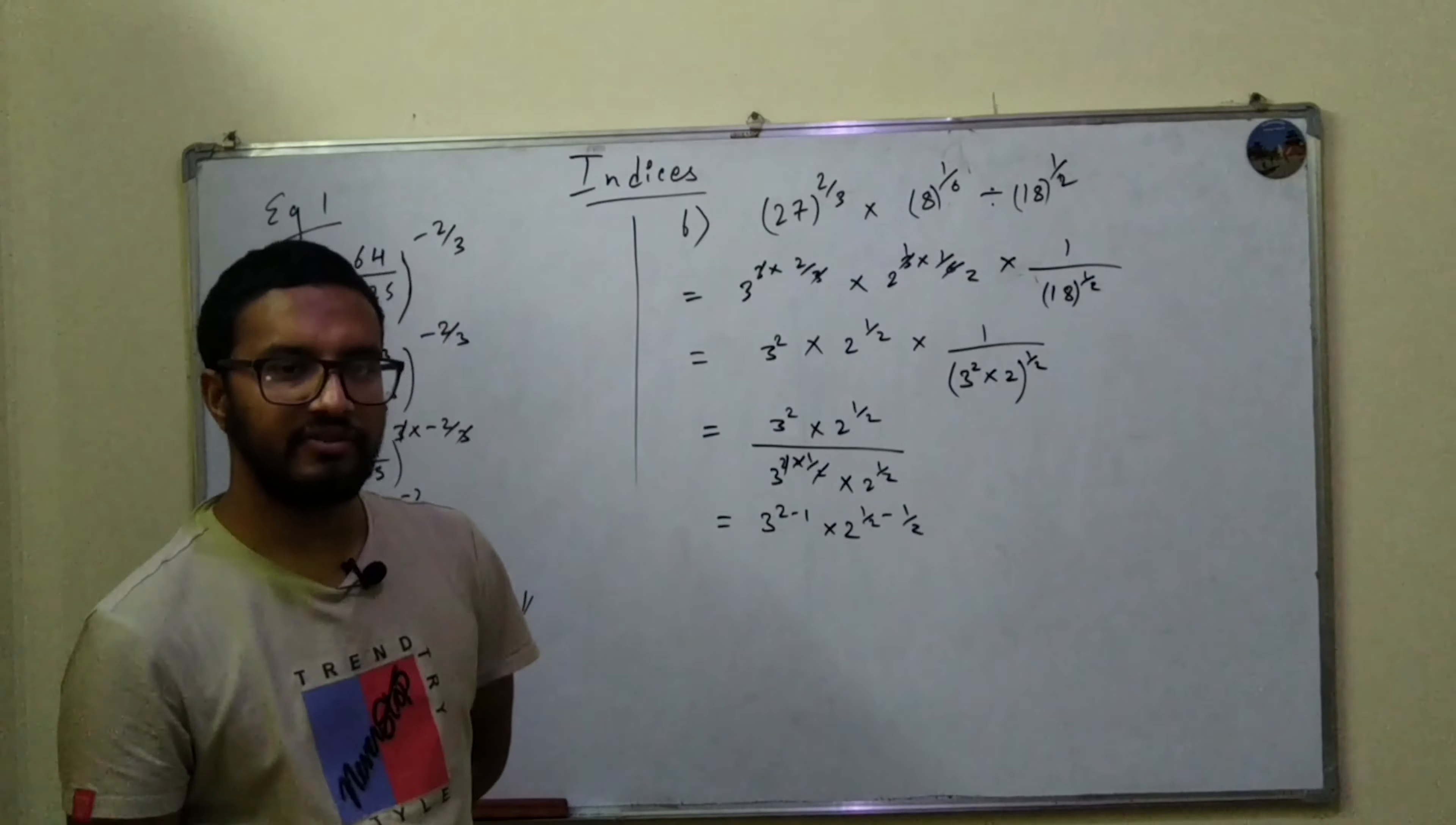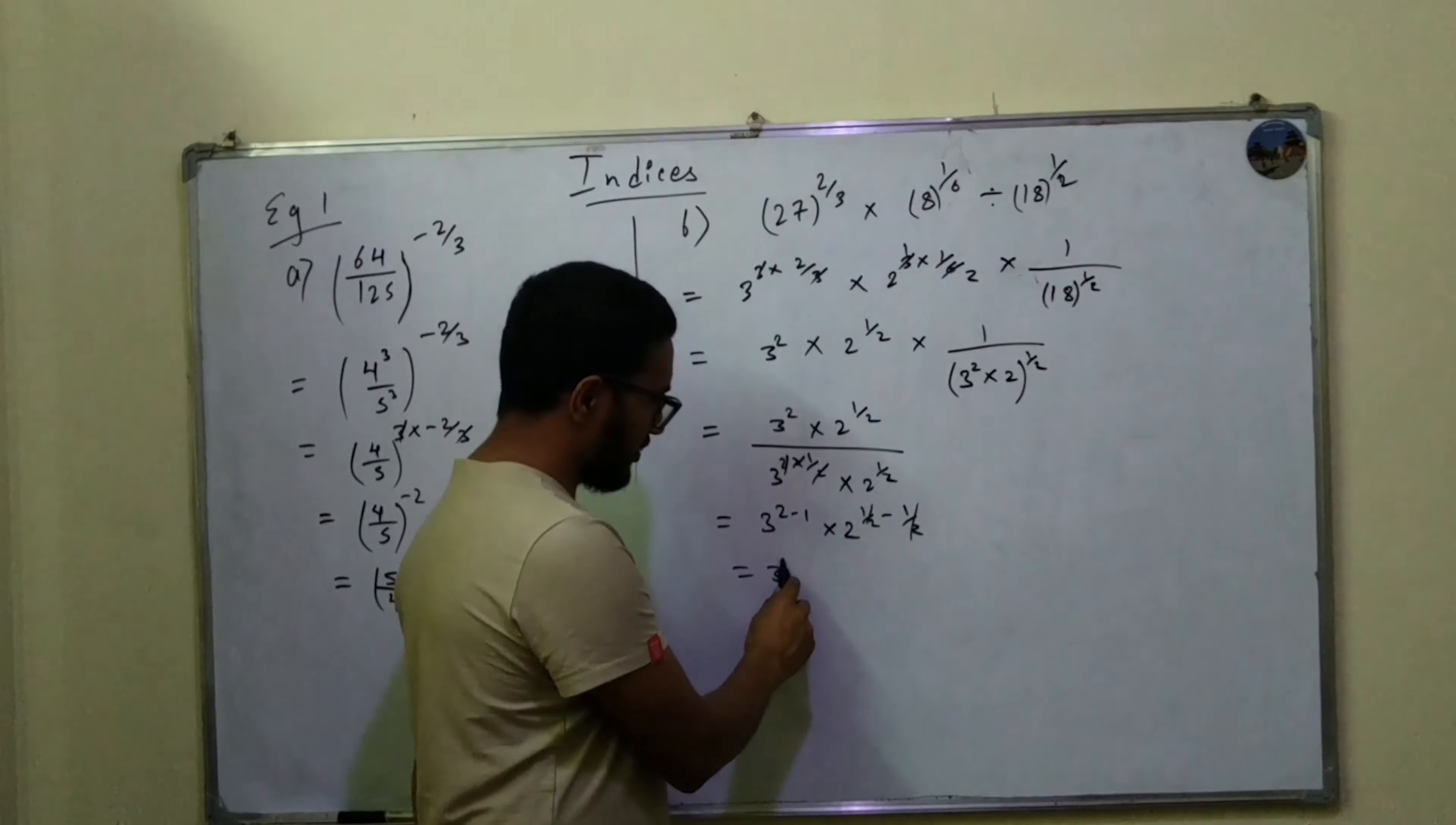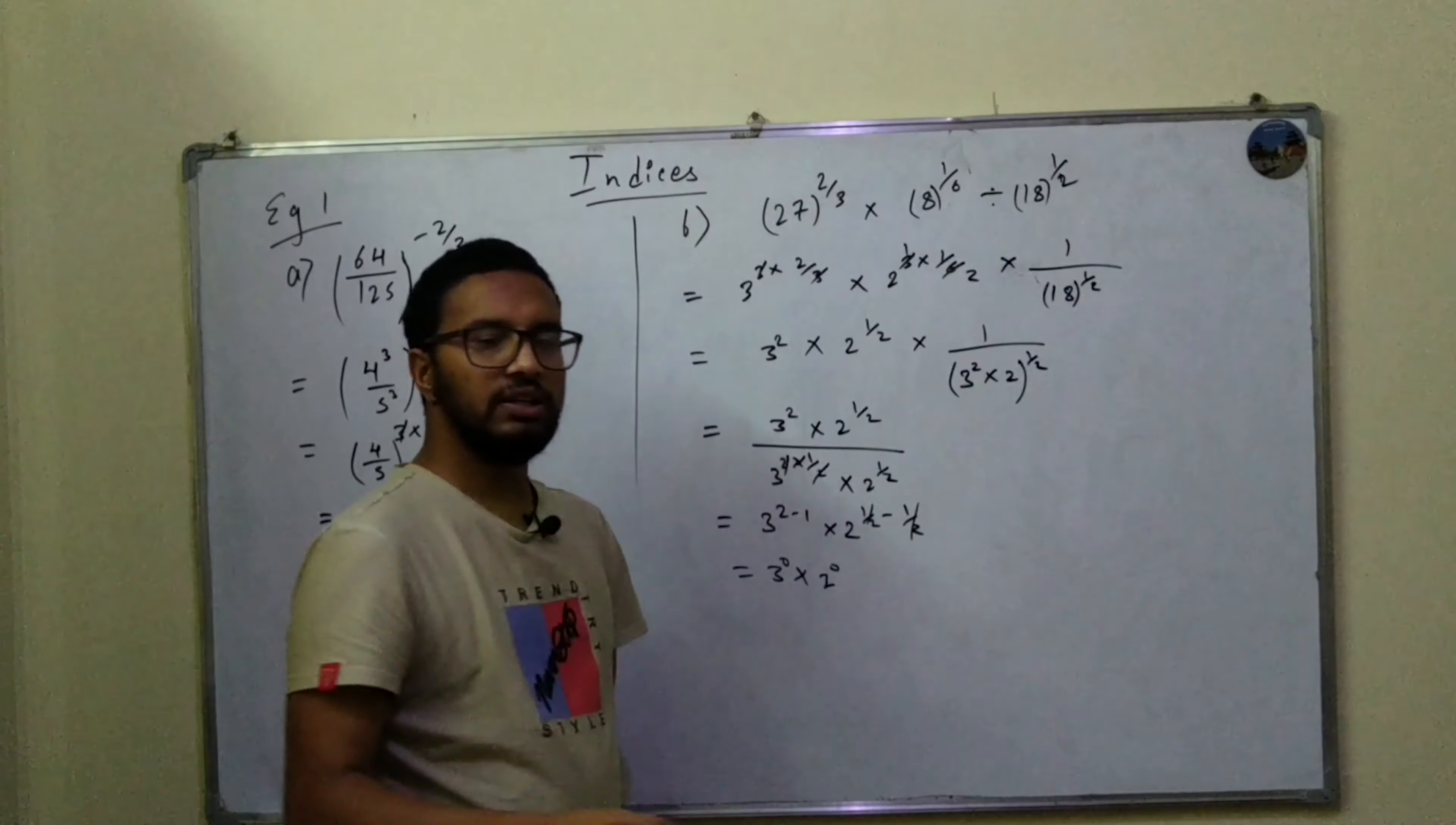This and this will be cancelled out, will be 2 to the power of 0. In this case for 3 it will be 0, and for 2 will be 0.